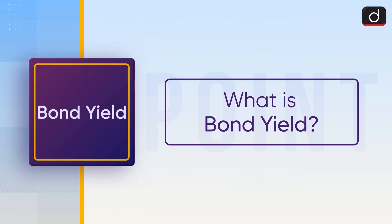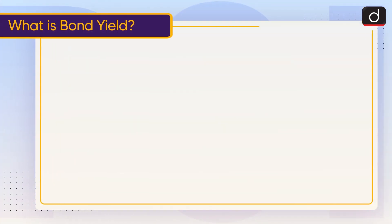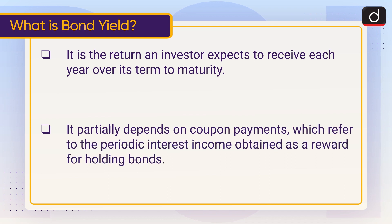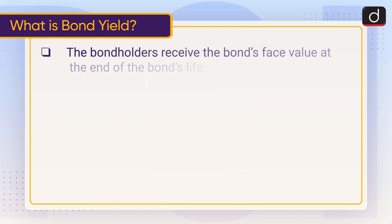Now let's understand what is bond yield. It is the return an investor expects to receive each year over its term to maturity. It partially depends on coupon payments, which refer to the periodic interest income obtained as a reward for holding bonds. The bond holders receive the bond's face value at the end of the bond's life.